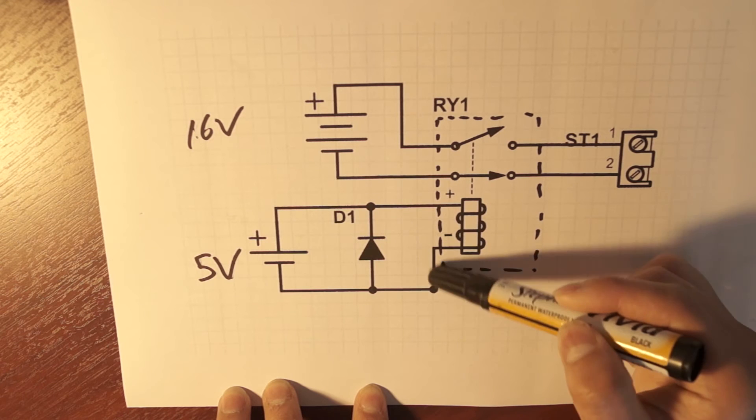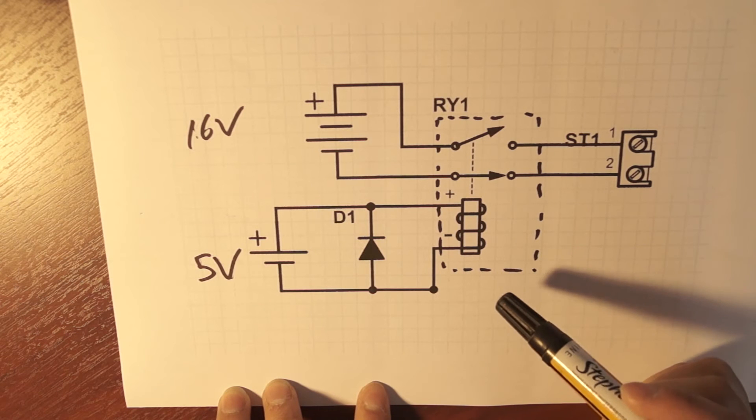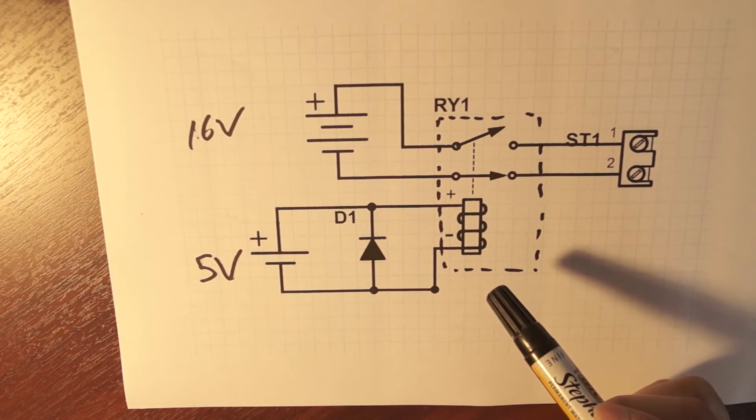So the coil will of course still induce a voltage because there's a decrease in current. But then it'll go, oh well, there's an easy path here, and it will just flow through here and not blow up all the components. And the voltage spike is going to be much, much less.